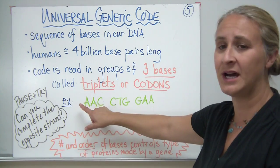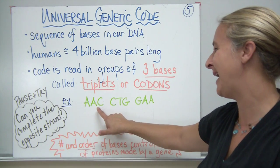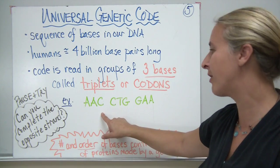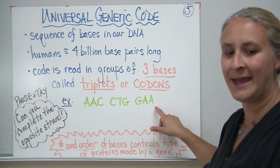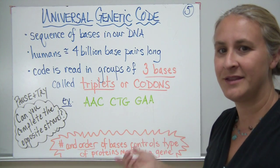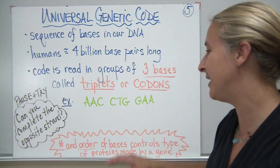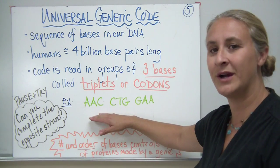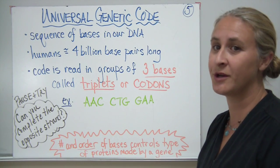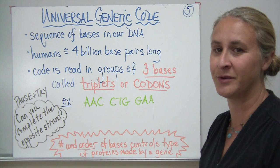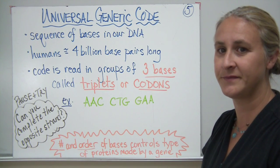In this example, if one strand of DNA had the codons AAC, CTG, and GAA, I'd like you to pause and try to figure out what the complementary strand would be using your base pairing rules from the previous board. Pause and try to see how you did.